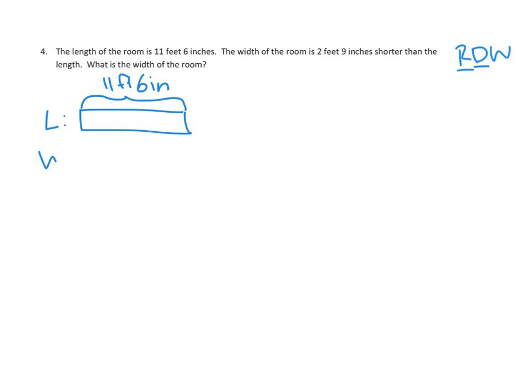Great. And we know what the width is. We don't know exactly, but we know that it's shorter. How much shorter? It is 2 feet 9 inches shorter. So the width is this long, right? It's not as long as the length. And we know exactly how much shorter it is than that length, right? So we've got a length of 11 feet 6 inches. We subtract away this amount, and we would get this.